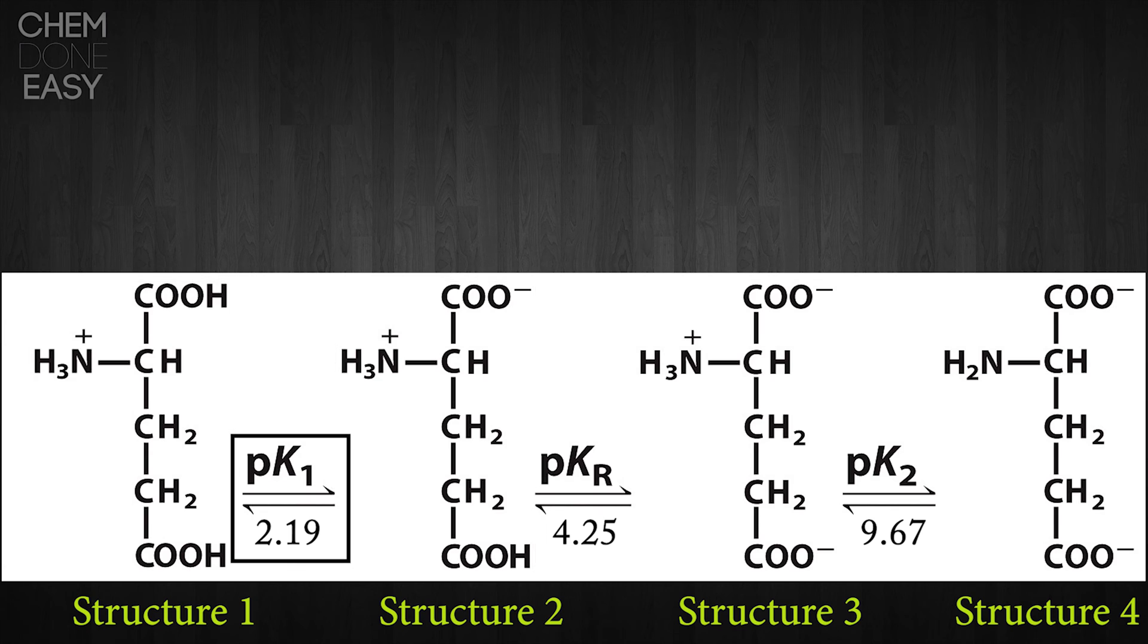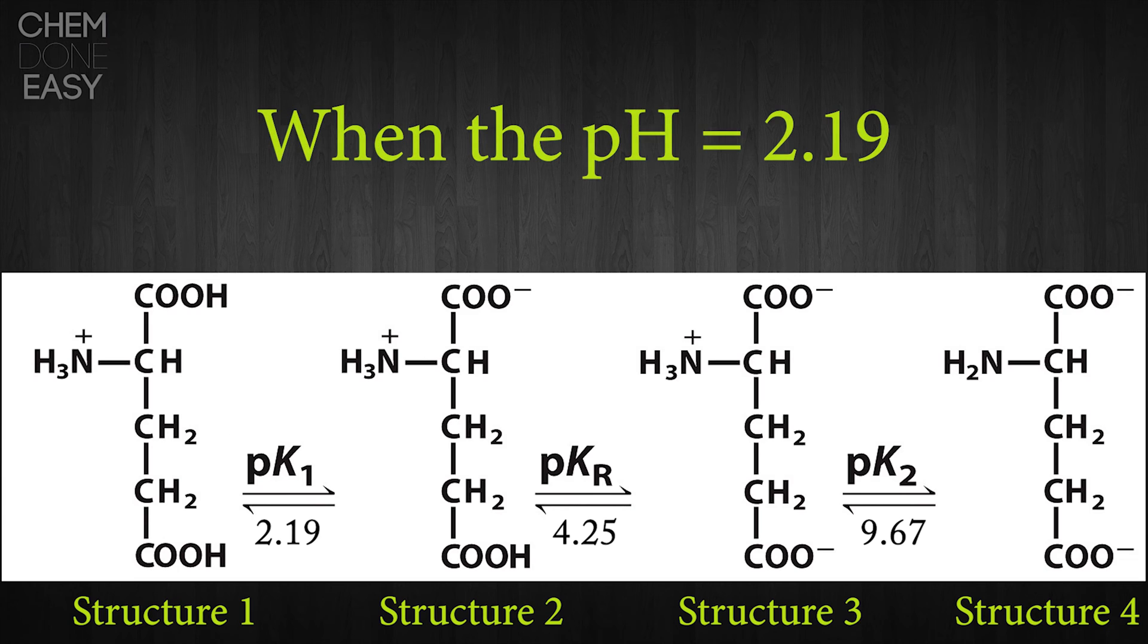So that tells us that at a pH of 2.19, 50% of our molecules is going to be in structure one, and 50% of the molecules are going to be in structure two.